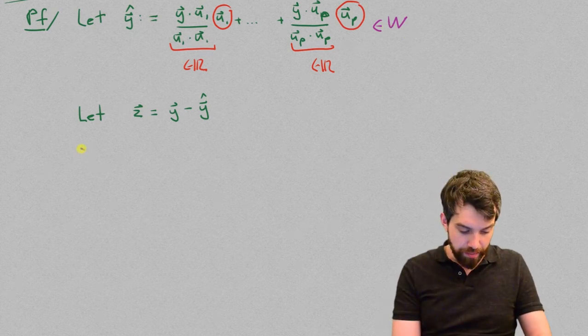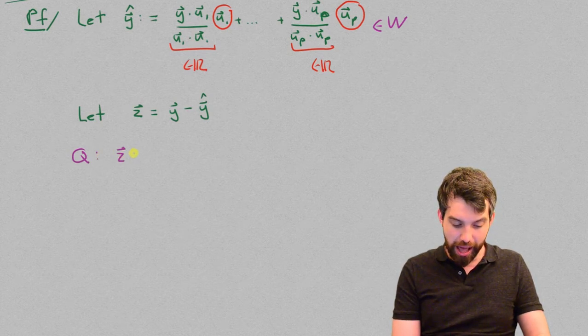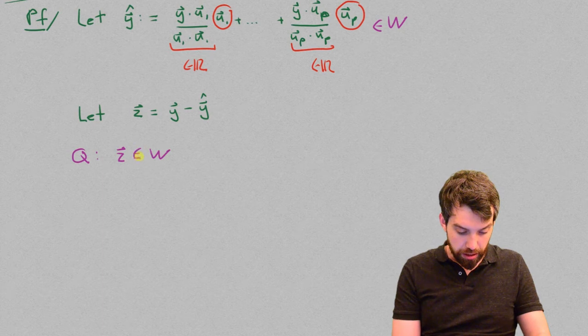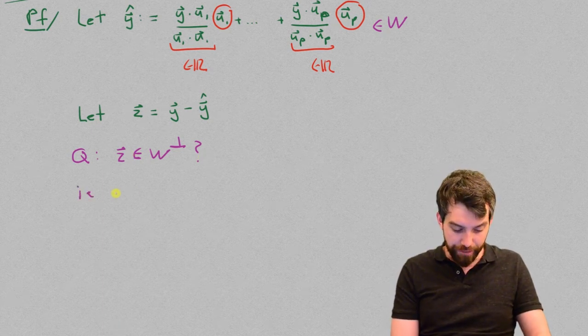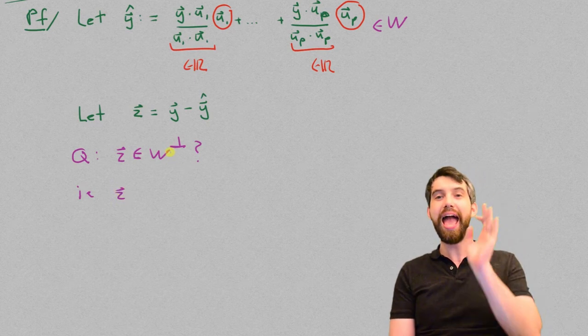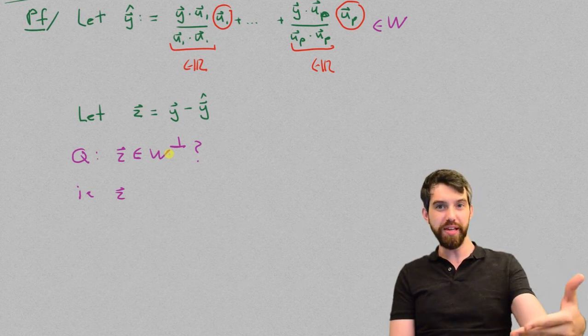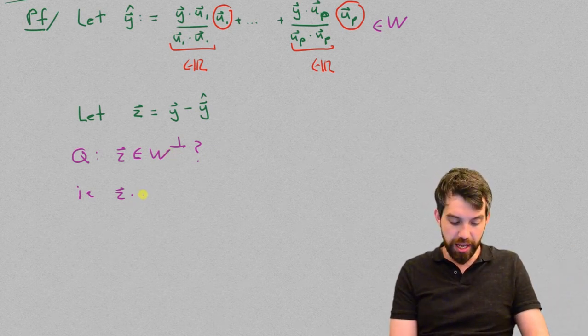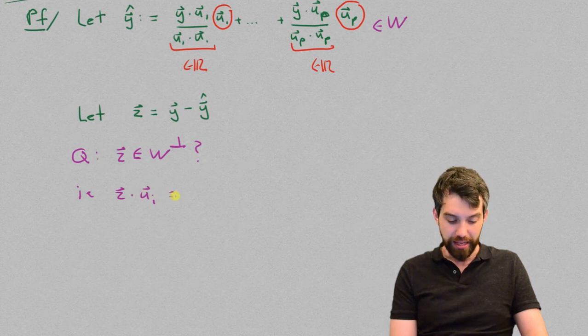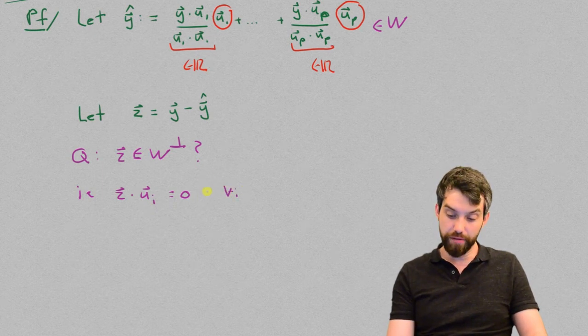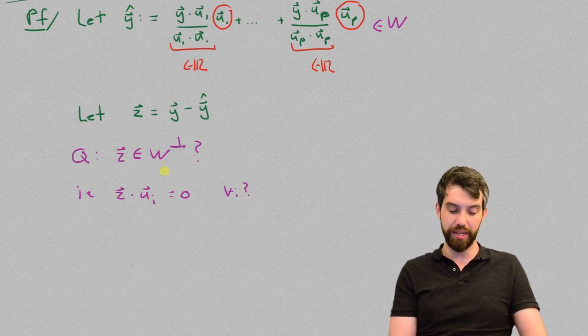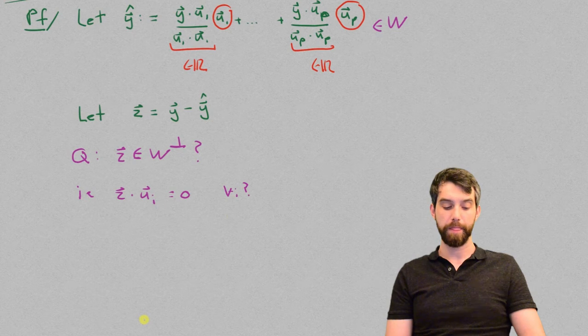But, the question is then, this is what I am left to, is it the case that my z is an element of W⊥? That is our question. Well, how would we know that? It would have to be that the z vector is going to be dotted with any vector in W equal to 0. Or, as we saw previously, an equivalent property is that z dotted with ui is equal to 0. If that is true for every single i, then we are going to have the property that this z is in W⊥, because this is an equivalent property to being in W⊥. So, that is what we have to do. We have to verify that this is the case.